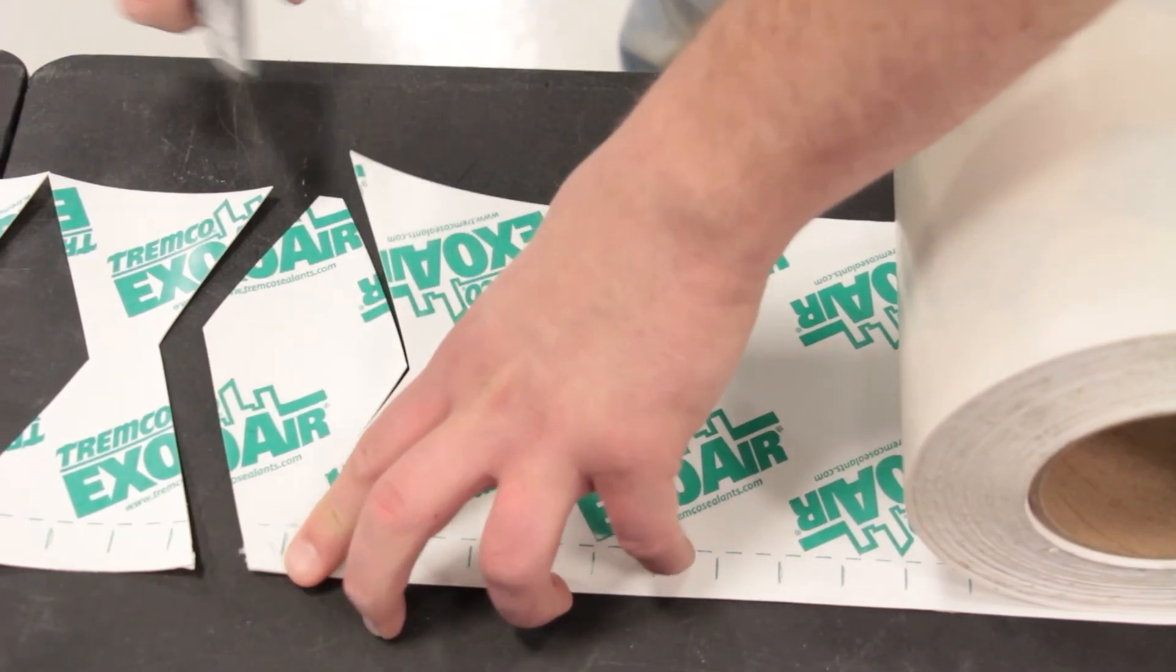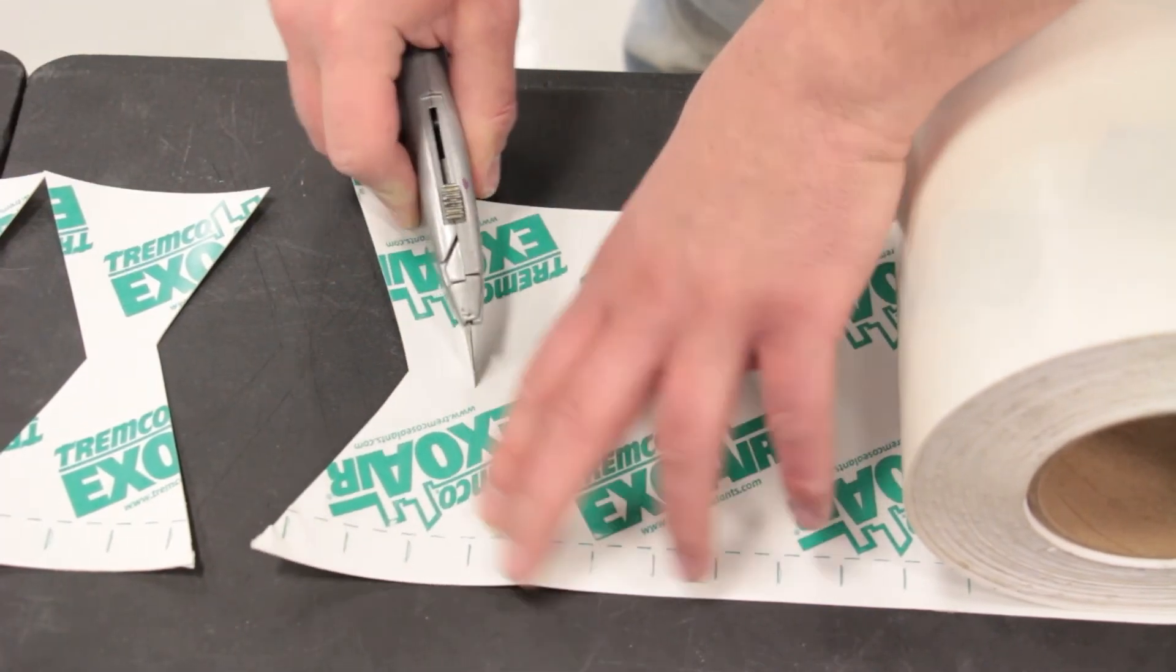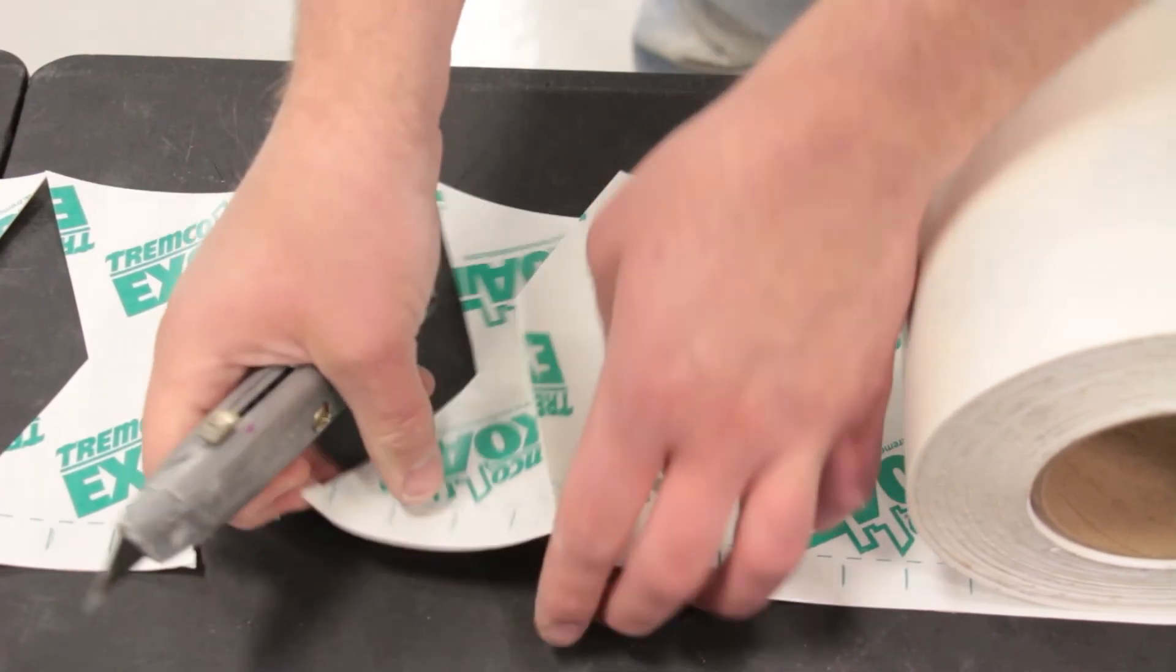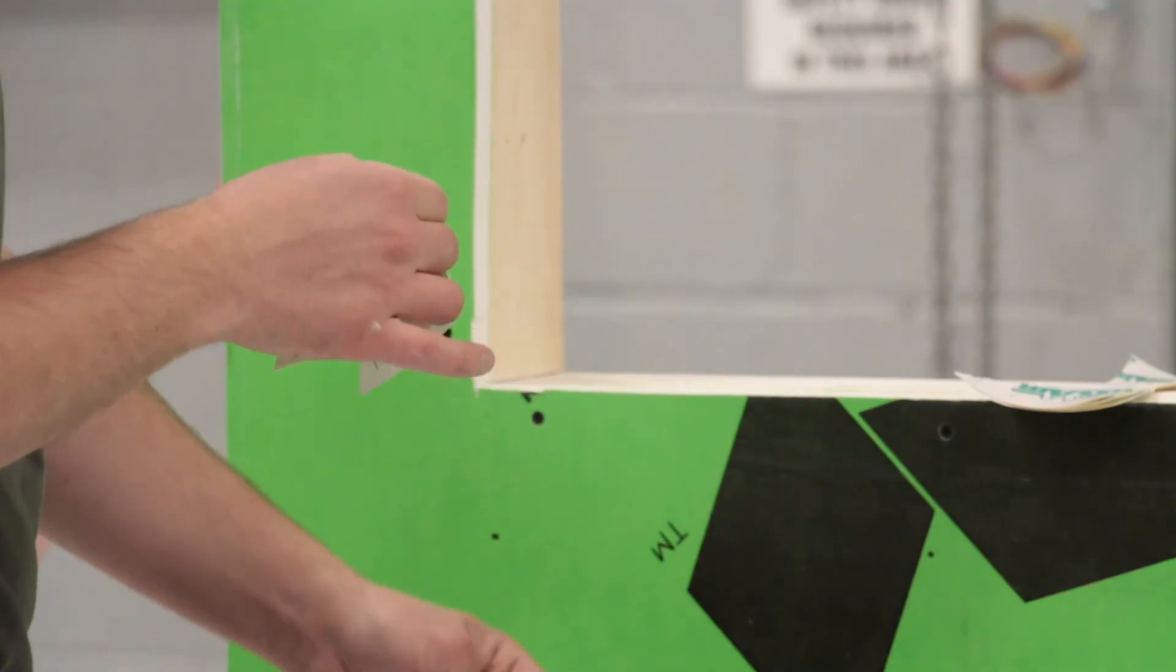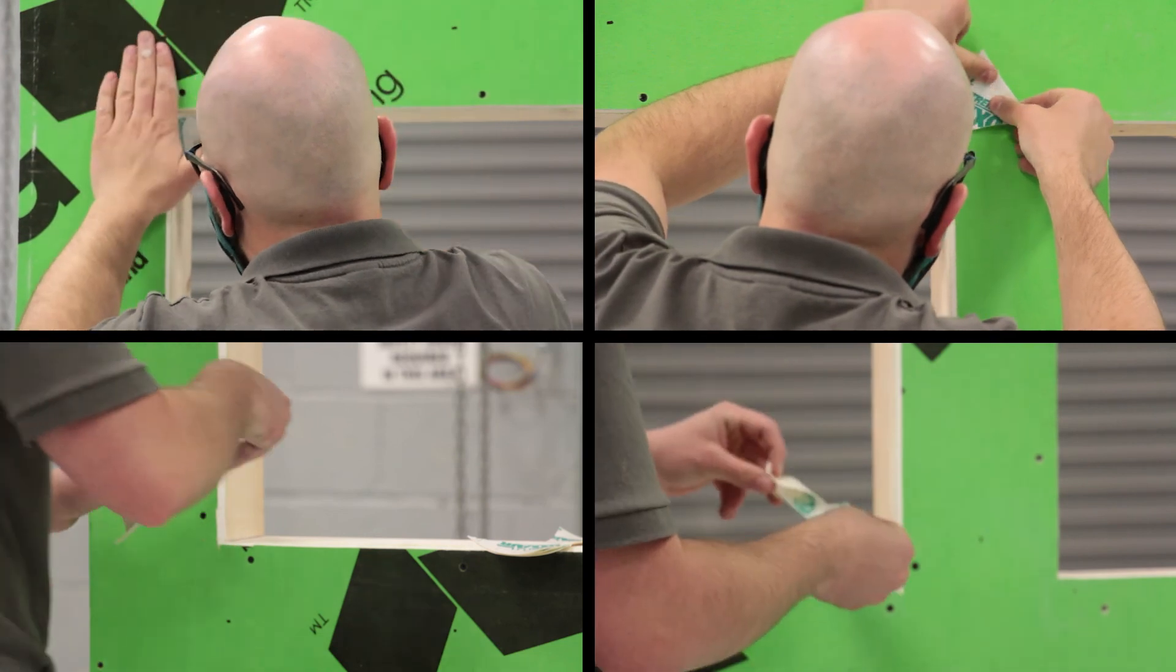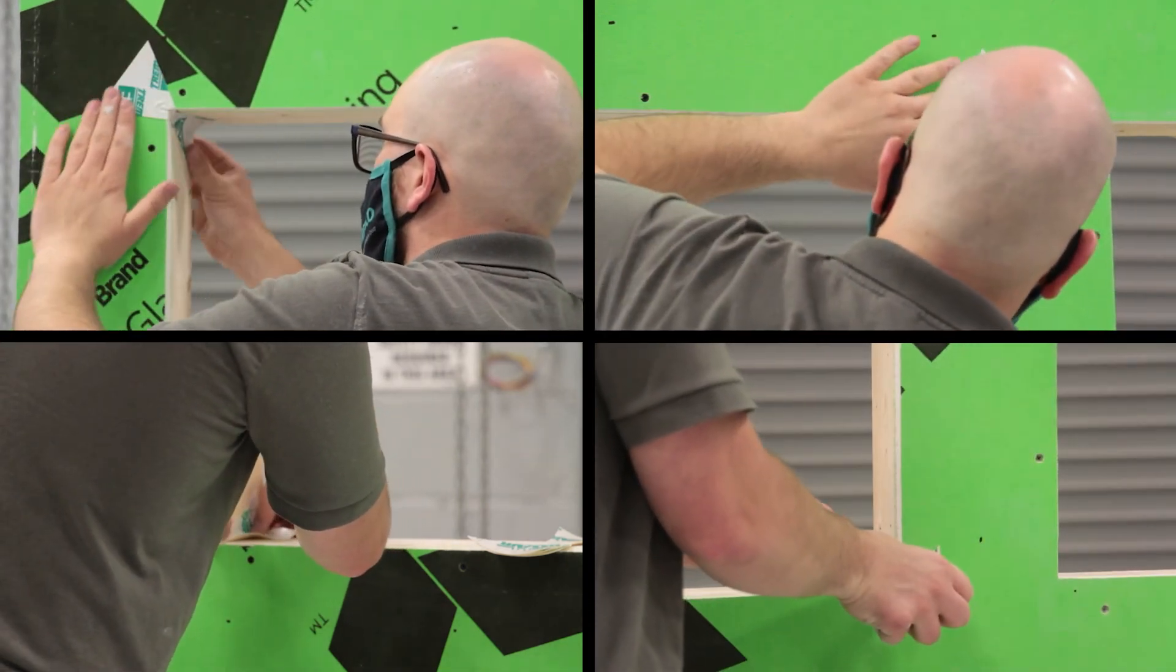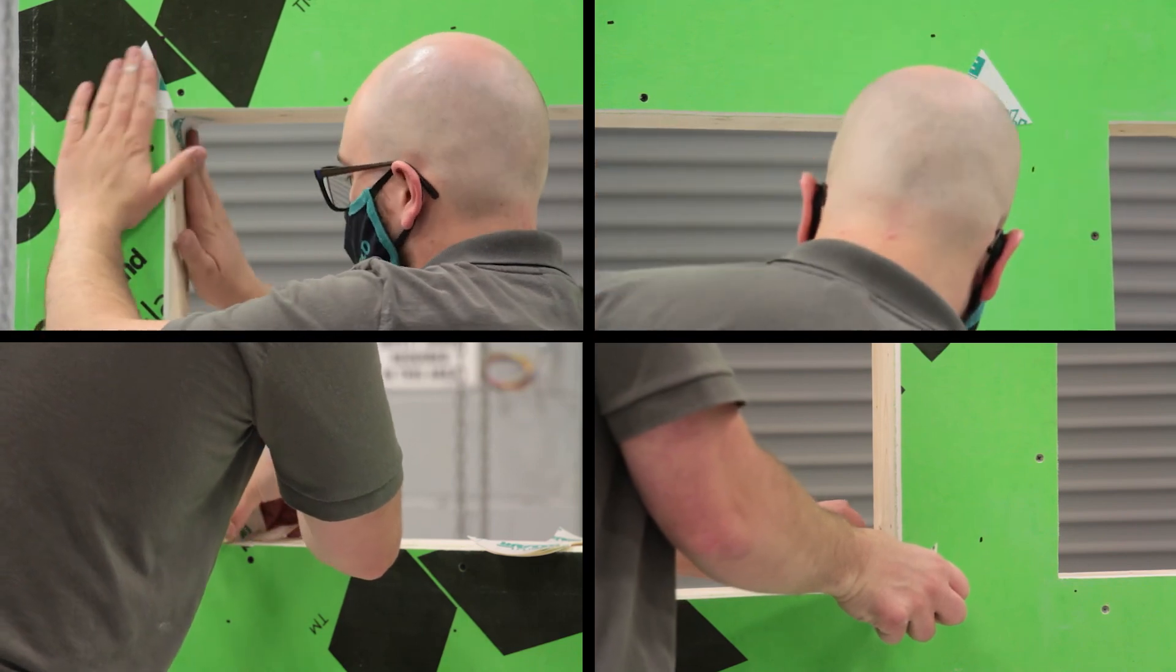Start by detailing the corners by cutting out footballs or bow ties of ExoAir 110AT. Peel back the release liner and install at all four corners, using a roller to roll out any air bubbles or fish mouths. Alternatively, you can apply the Dymonic 100 urethane sealant at these corner locations.